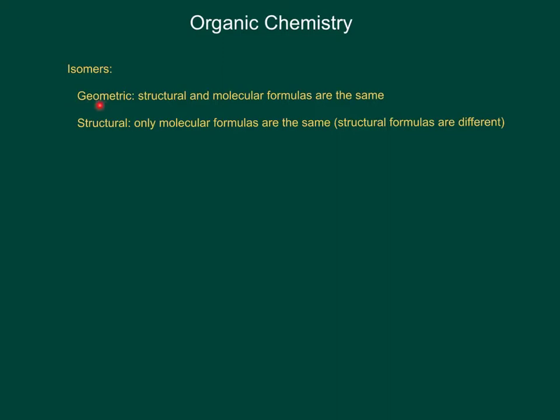In a geometric isomer, the structural and molecular formulas of the two compounds are the same. In a structural isomer, only the molecular formulas are the same — the structural formulas are going to be different.